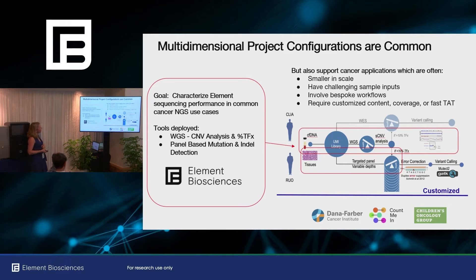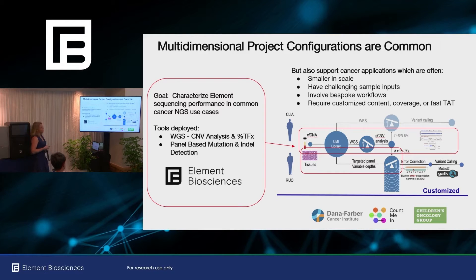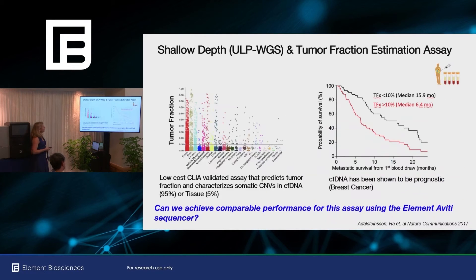The applications that we tested in this platform were two very commonly applied cancer assays in our lab. The first is ultra-low-pass coverage whole genome sequencing, where we generate 0.1x coverage of the whole genome for copy number analysis, and also panel-based mutation and indel detection. The application space we're supporting includes Dana-Farber Cancer Institute. We also work with CountMeIn to do return of results as part of direct-to-patient projects and large collaborative efforts like the Children's Oncology Group. The first assay we evaluated is shallow-depth whole genome sequencing. In our lab, we've run about 15,000 of these over the past several years across lots of different tumor types.